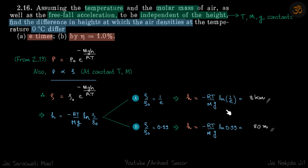And this is -RT/Mg ln(0.99). So we can write this as—just so you know how we are calculating this—this is RT/Mg, which comes to be 8 kilometers. So this is 8 kilometers times ln(0.99). ln(0.99) we can write as ln(1 - 0.01), and because 0.01 is very small, this can be approximated to 0.01. So 0.01 times 8 kilometers is 80 meters. These are our answers.